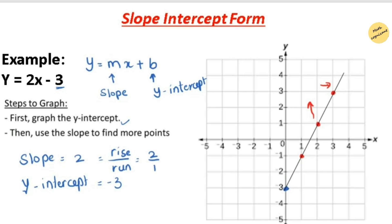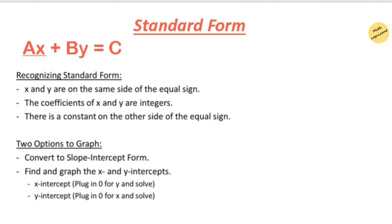The second form is the standard form of a linear equation, given by ax plus by equals c, where x and y are on the same side of the equal sign. The coefficients of x and y are integers, x and y are the variables, and c is a constant on the other side of the equal sign. These equations can be converted into slope-intercept form or graphed by finding x and y intercepts.